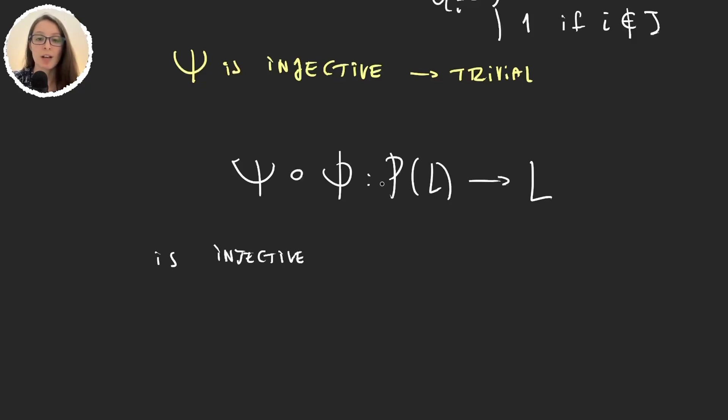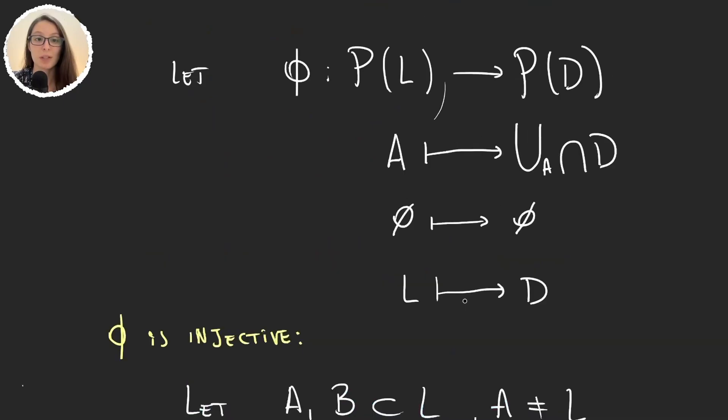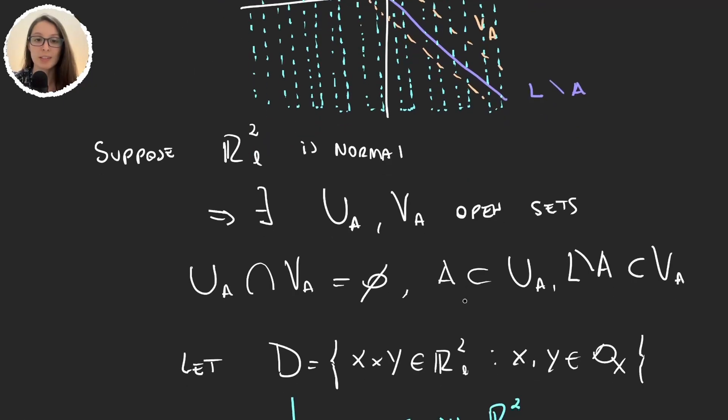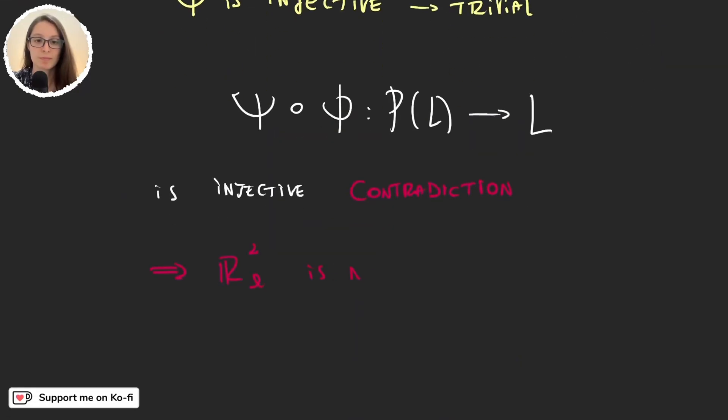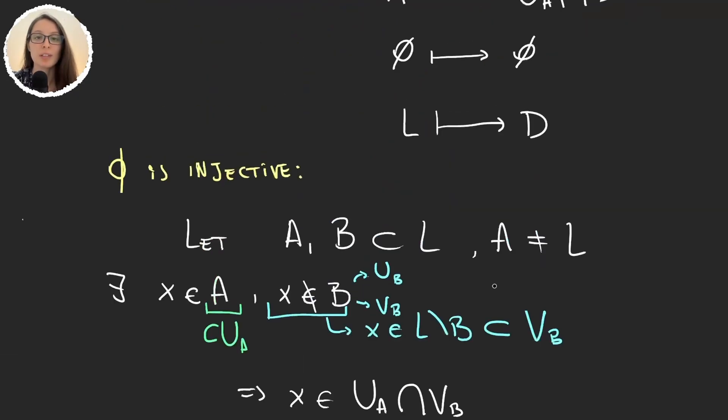And now that is the absurd. How can we inject parts of L onto L? That is just a contradiction. And this contradiction comes from assuming that we could actually find these two sets, UA and VA. And so this is not true. RL squared is not normal. The Sorgenfrey plane is not normal. And with this complicated example, we finish this video.